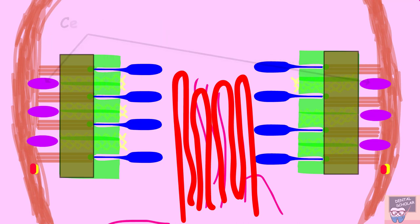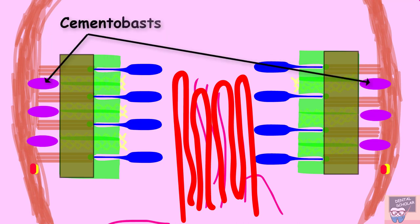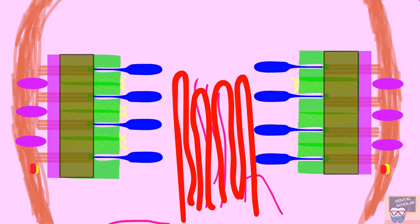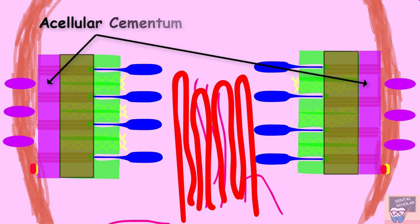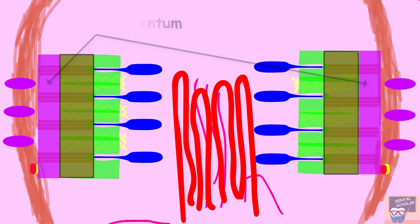Following this, the cementoblast at the periphery mineralizes the PDL fibers, forming the acellular extrinsic fiber cementum. This process continues toward the apex until the entire root is formed.